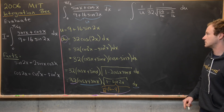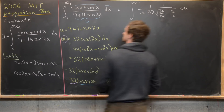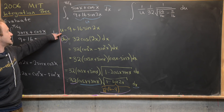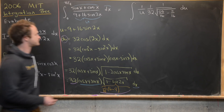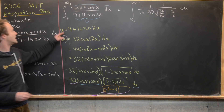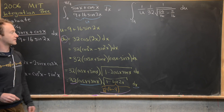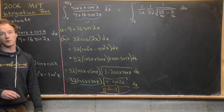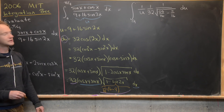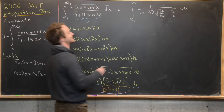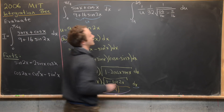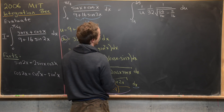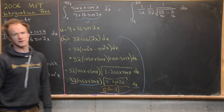Now let's talk about the bounds of integration. When x equals 0, u equals 9. When x equals pi over 4, sine of 2 times pi over 4 equals sine of pi over 2, which equals 1, so u equals 9 plus 16, which is 25. Now let's simplify: we take a 16 out of the denominator, that becomes a 4, and that 4 cancels the 32 giving us an 8, which we bring out front. So we get one over 8 times the integral from 9 to 25 of one over u times the square root of 25 minus u, du.